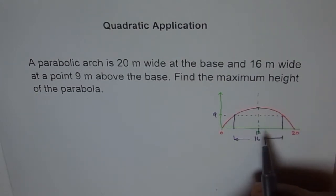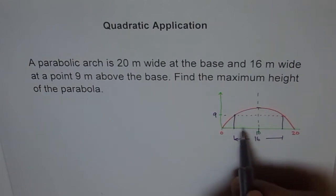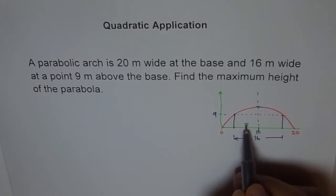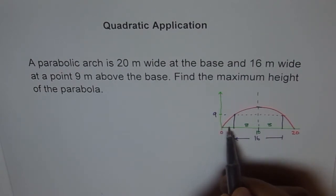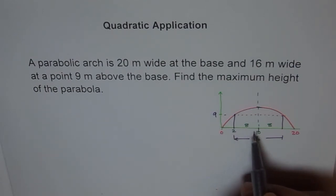Now, if 0 to 10, 10 to 20 center point, 16, that means this is 8 away from 10. Is it okay? And 8 on this side. So how much is this distance from here to here? It is 2. Is it okay? 0 plus 2, 2 plus 8 is 10. That makes sense, right?